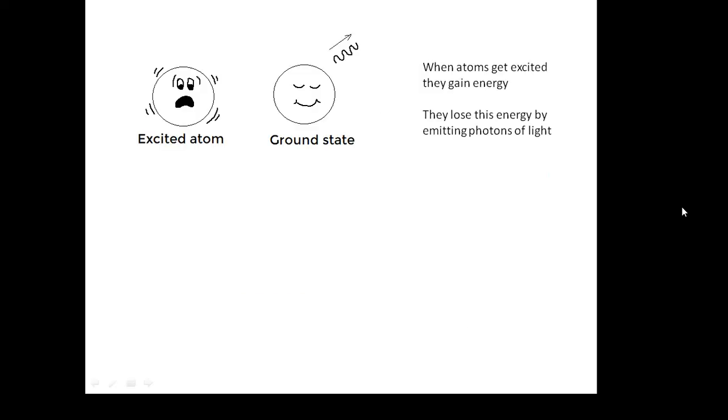Now, how does this work? Well, here's an atom, and atoms can get excited, and it's to do with the electrons whizzing around the atom, jumping up to energy levels. You might remember energy levels from the chemistry, and when electrons jump up energy levels, they get excited.